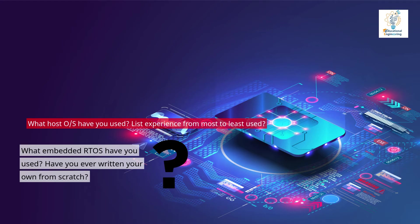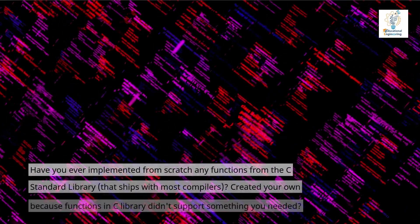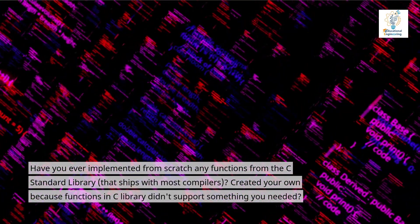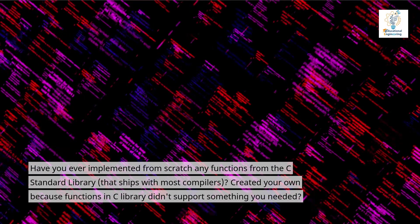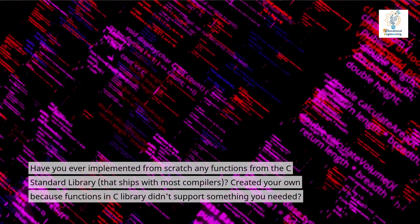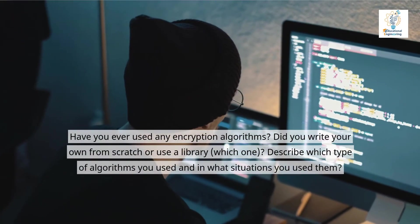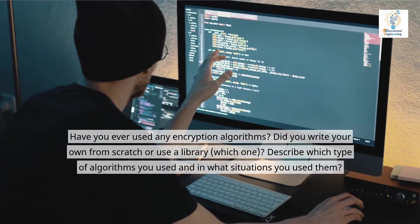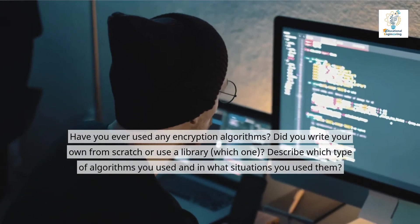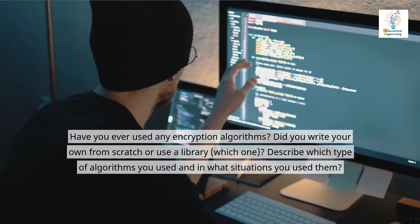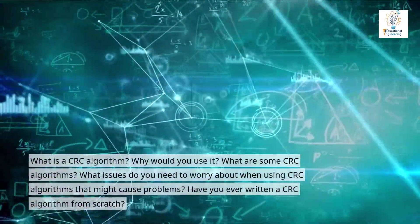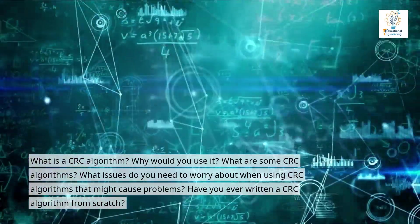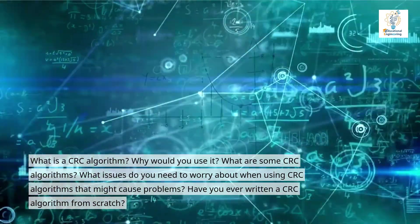Have you ever written your own RTOS from scratch? Have you ever implemented from scratch any functions from the C standard library that ships with most compilers? Created your own because functions in the C library didn't support something you needed? Have you ever used any encryption algorithms? Did you write your own from scratch or use a library? Which one? Describe which type of algorithms you used and in what situations. What is a CRC algorithm? Why would you use it? What are some CRC algorithms? What issues do you need to worry about when using CRC algorithms that might cause problems?